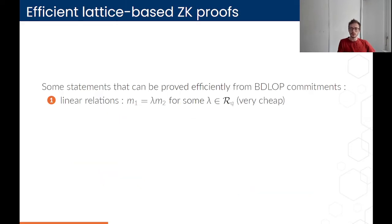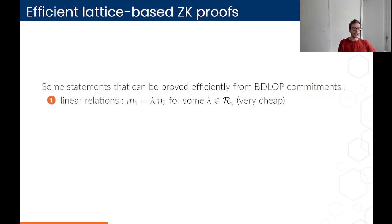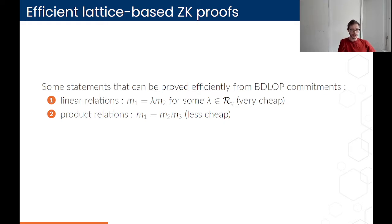Now a short list of the statements that can be proven on BDLOP commitments. First, you can prove a linear relation: say you have a commitment to M1 and M2, then you can prove that M1 equals Lambda·M2 for some Lambda in R_Q, very cheaply. Second is product relations: say you have a commitment to M1, M2, and M3, then you can prove that M1 equals M2 times M3 for pretty cheap.